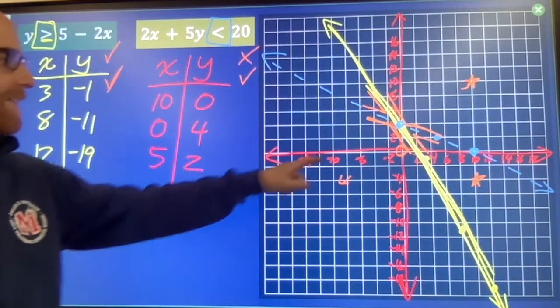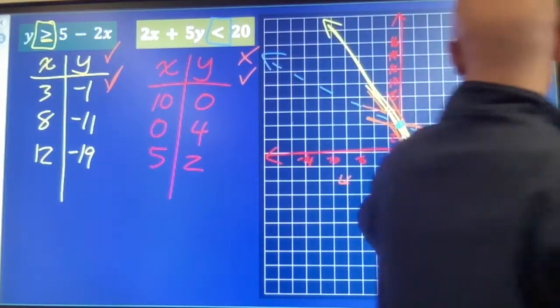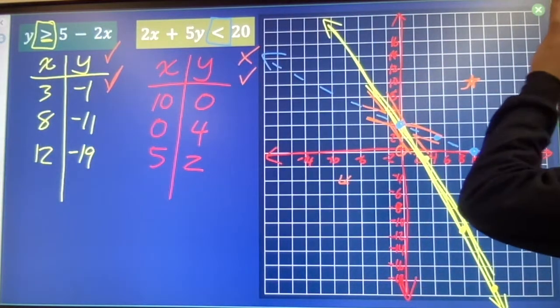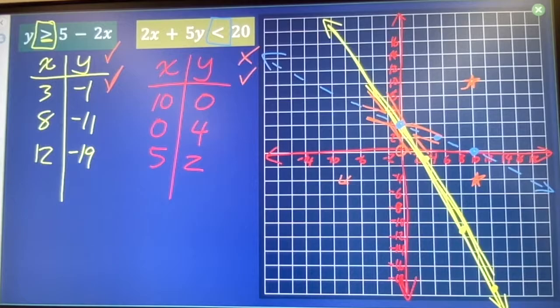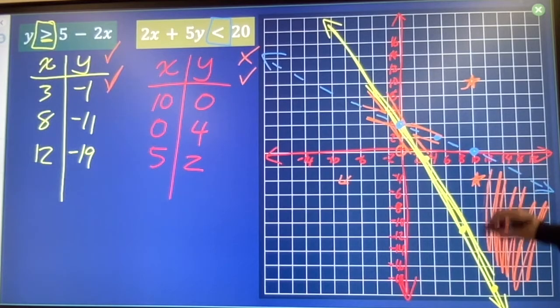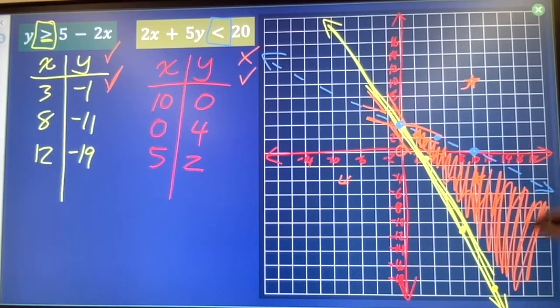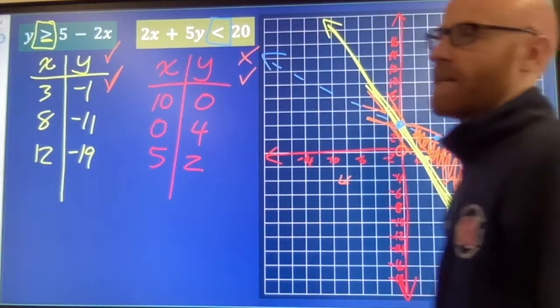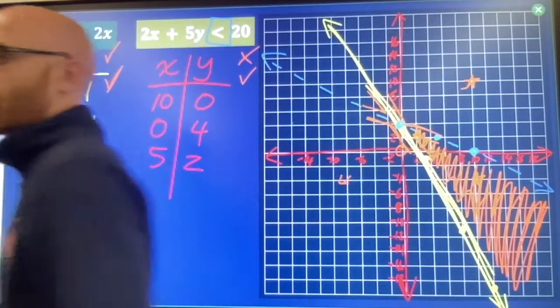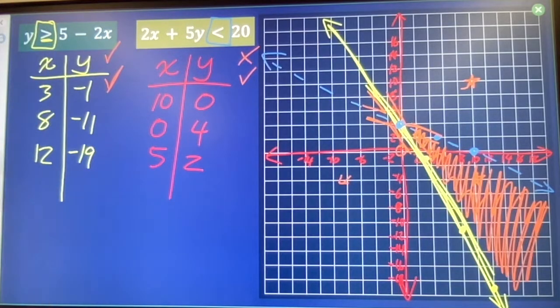Okay. So, this point, x is 10, y is negative 4, solves both inequalities. That means that this section between the blue and the yellow line is going to contain all of the correct solutions. So, that will be the section we shade. That is modeling systems of inequalities on a graph.